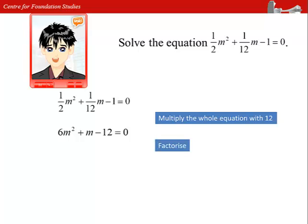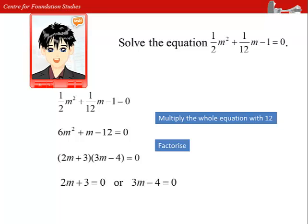After factorizing, we get 2 factors: 2m plus 3, multiplied with 3m minus 4, equals to 0. Hence, we get the answers: m equals to negative 3 over 2, or m equals to 4 over 3.